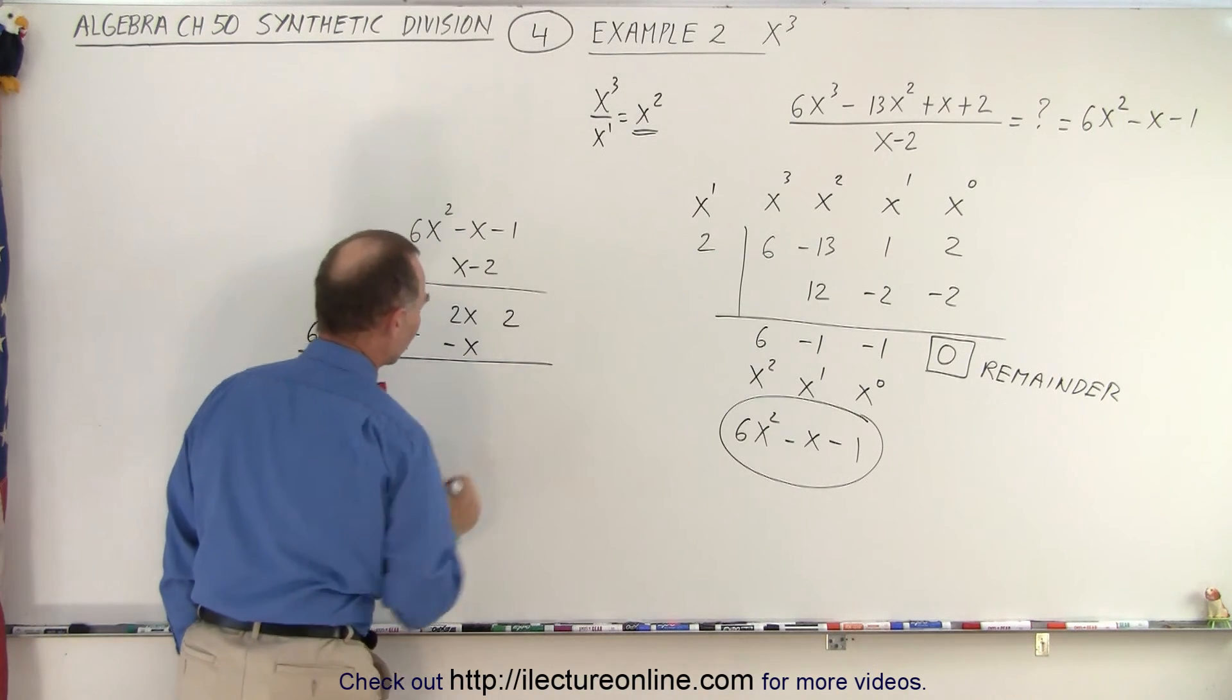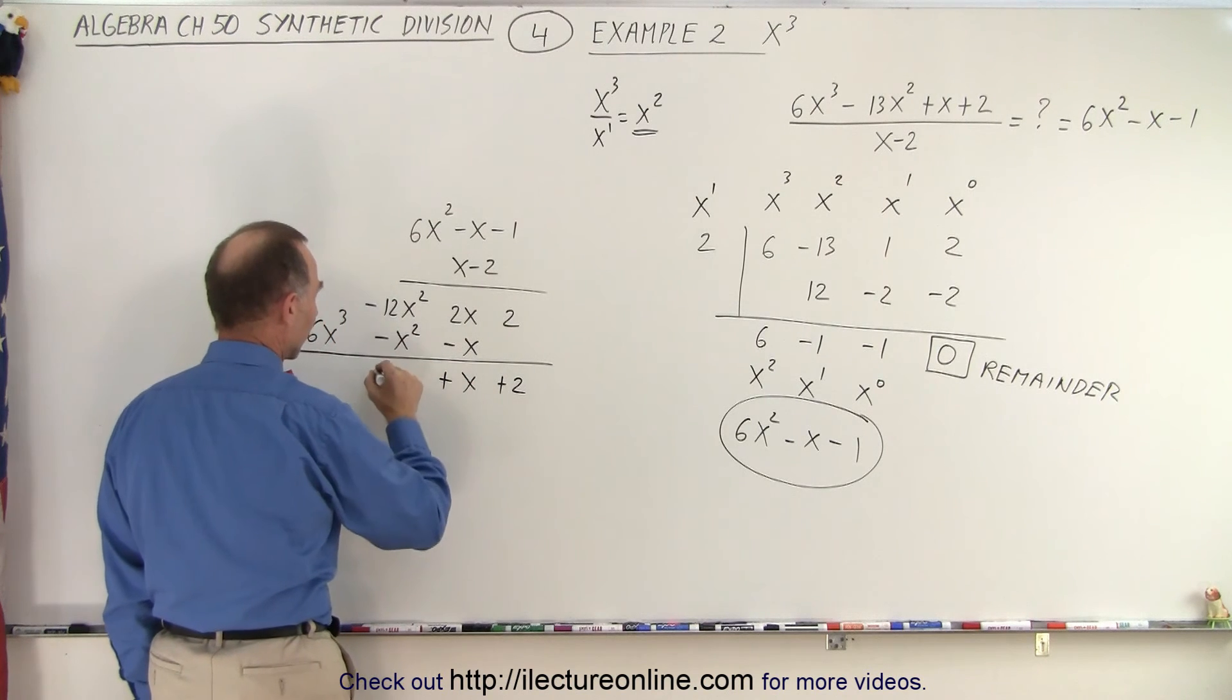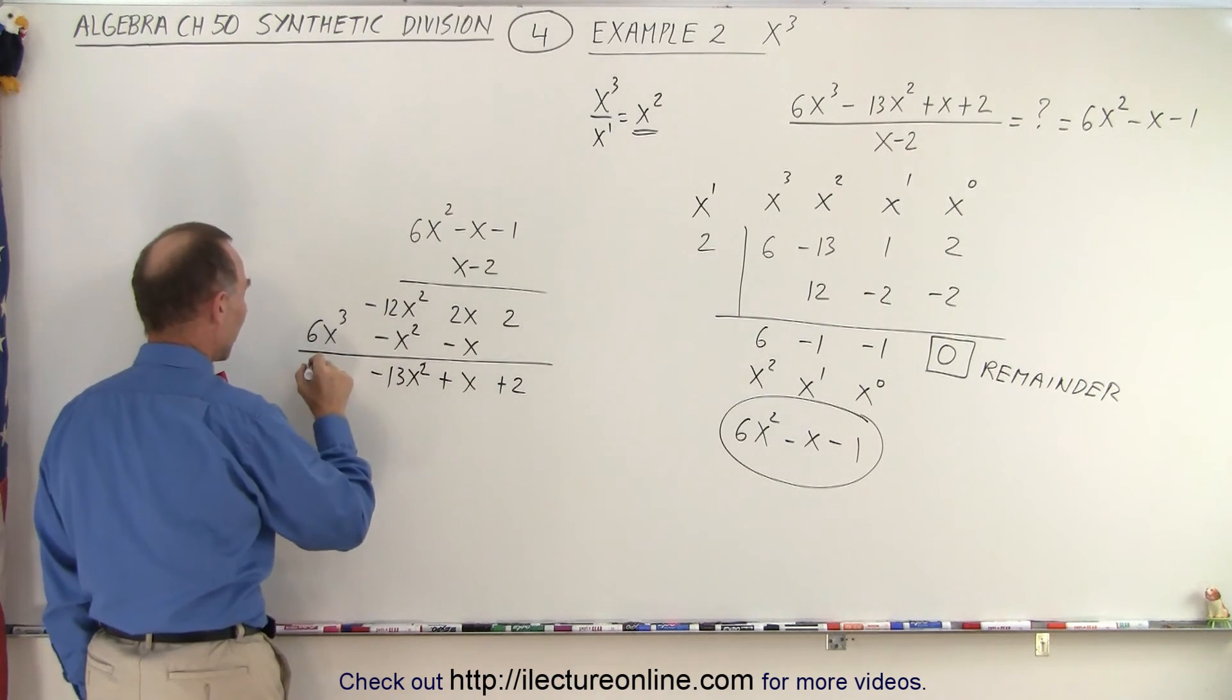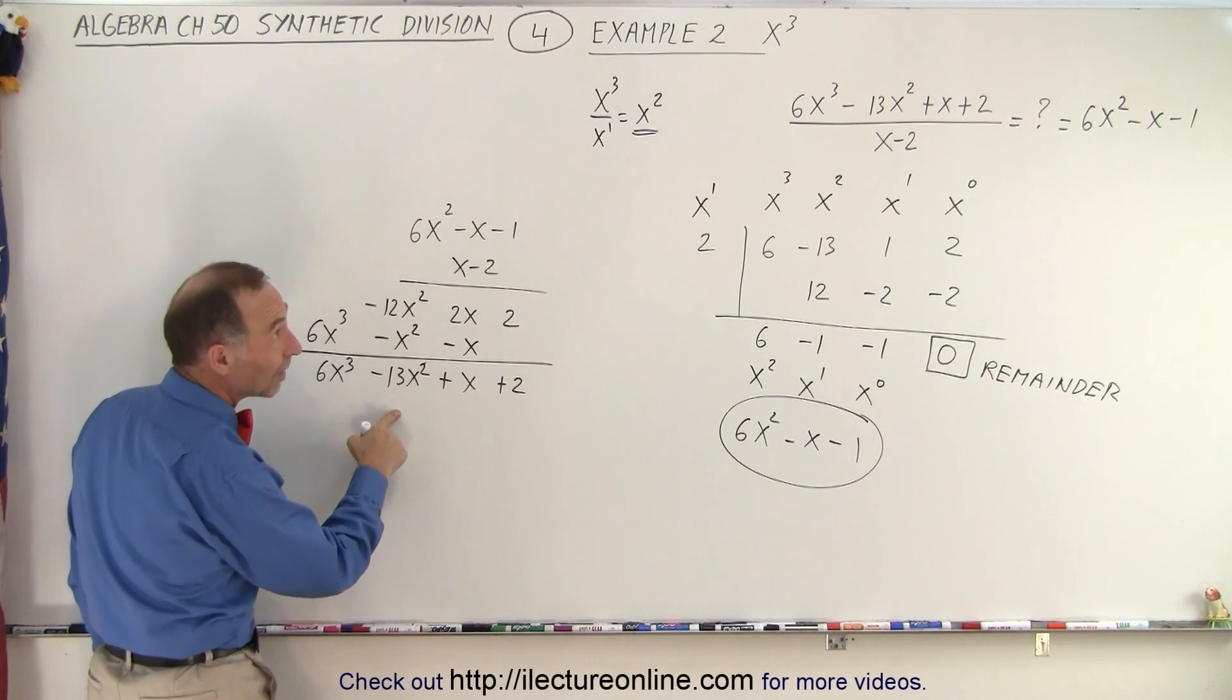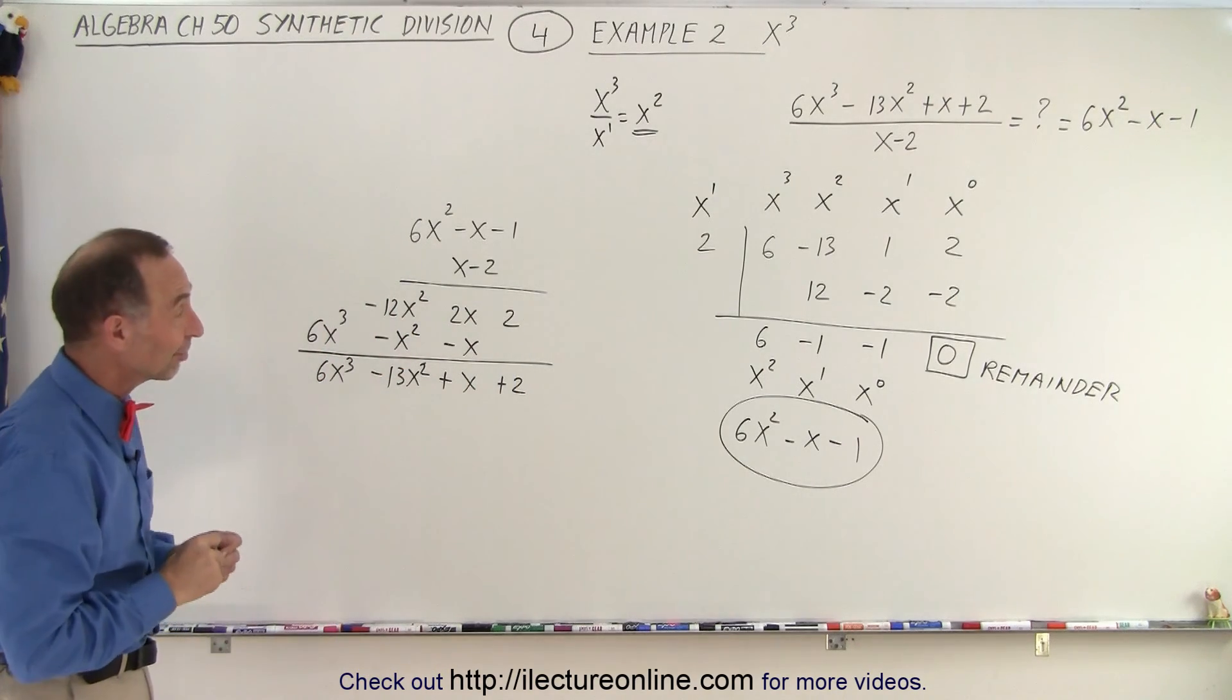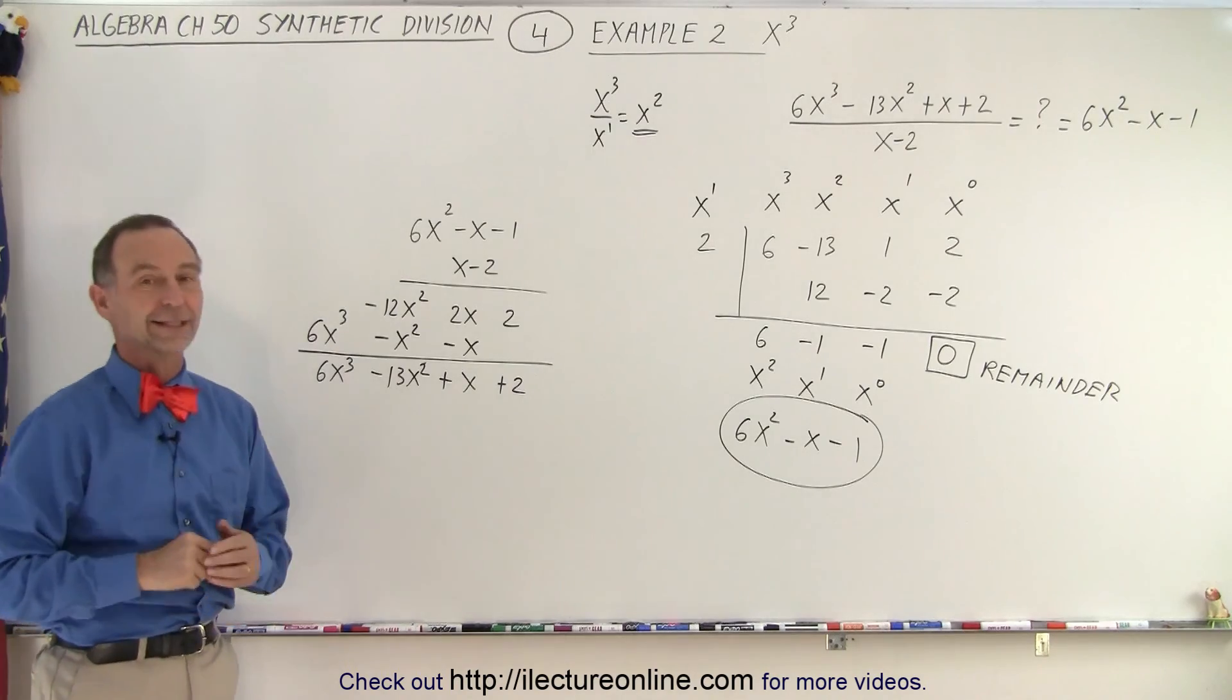Now we add like terms together. We get a positive 2. We get a positive x. We get -13x². And we get a positive 6x³. Notice that this is exactly the same as what we have up there in the numerator. So that's how you check to make sure you did your synthetic division correctly.